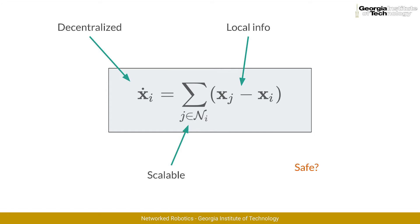Second, is the equation decentralized? Also in this case, the answer is yes. Robots are not receiving information on where to move based on some supervising entity dictating where to go. Then, is the consensus equation local? The answer is once again yes. The robots are acting on a measured quantity — the center of mass of their neighbors — which is measured in the local reference frame of each robot.